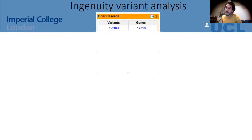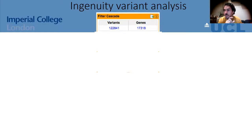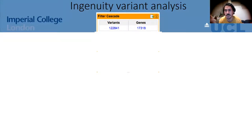At this point I should mention that when we got back the results, the product of conception had exactly the same sequence as the mother, meaning it was in fact maternal decidua — the maternal part of the placenta. About 80% of the time, nurses collect placental tissue that is maternal rather than fetal because the fetal portion is so tiny. So at this point we only had the patient, her husband, and the two brothers.